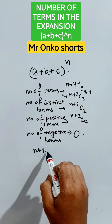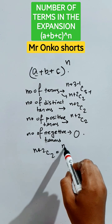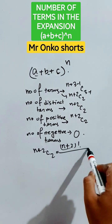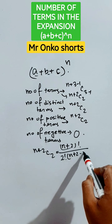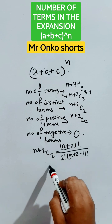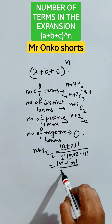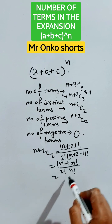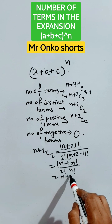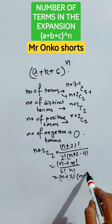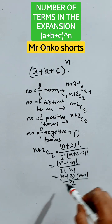Now let's break down ⁿ⁺²C₂. This is (n+2)! divided by 2! into (n+2−2)!, which is ultimately (n+2)! divided by 2! into n!. That is nothing but (n+2) into (n+1) divided by 2. That's the answer to the given question.